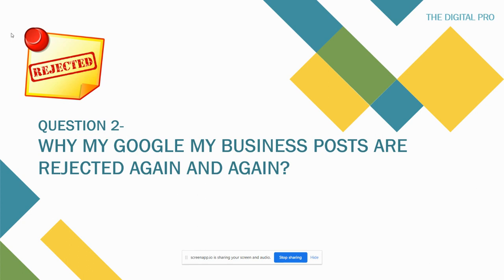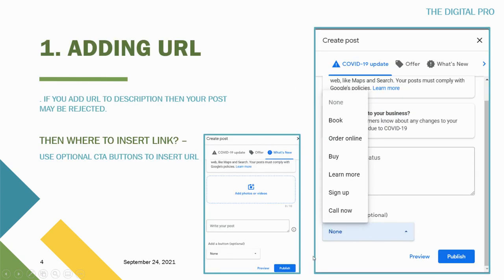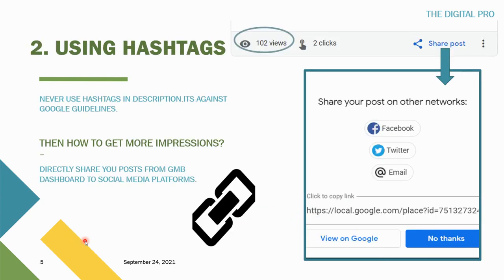The question is from one of our group members: why are my Google My Business posts rejected again and again? The first reason is adding a URL. If you are adding a URL to your description, your post may be rejected. Avoid using URLs. Instead, use the CTA button — it gives you around five to six options like learn more, book, order online, or buy — and put your link there, not in the description.